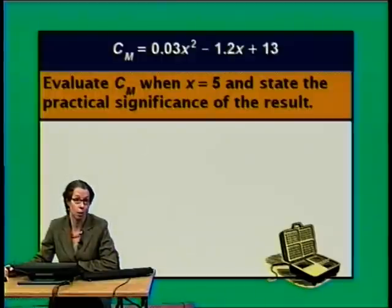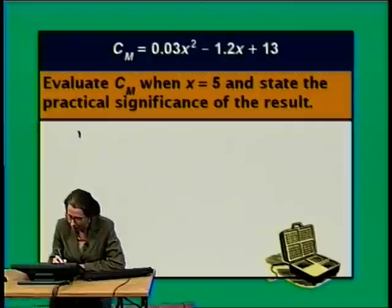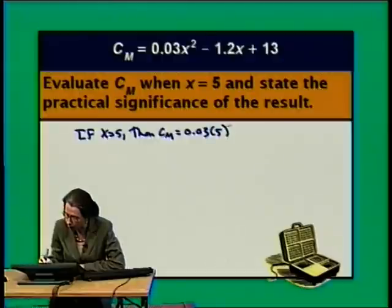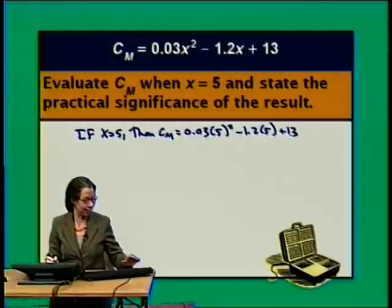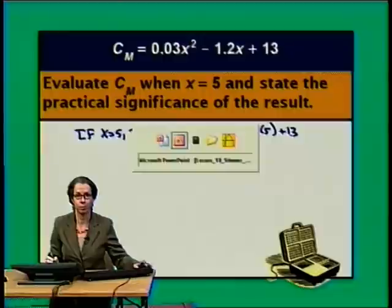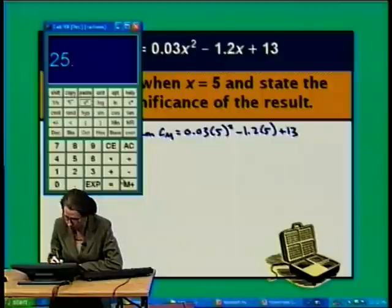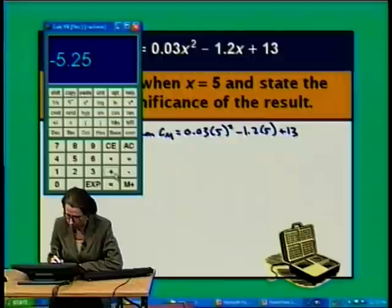So let's start with the number crunching. If X equals 5, then the marginal cost is 0.03 times 5 squared minus 1.2 times 5 plus 13. So 0.03 times 5 squared minus 1.2 times 5 plus 13 equals 7.75.